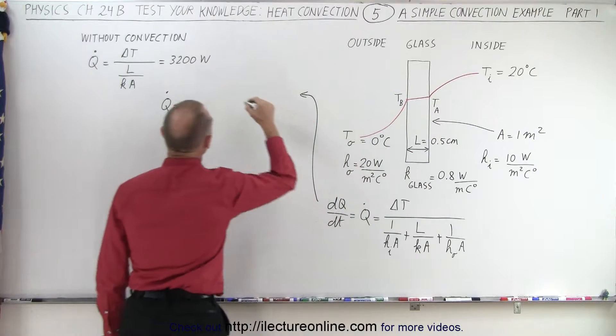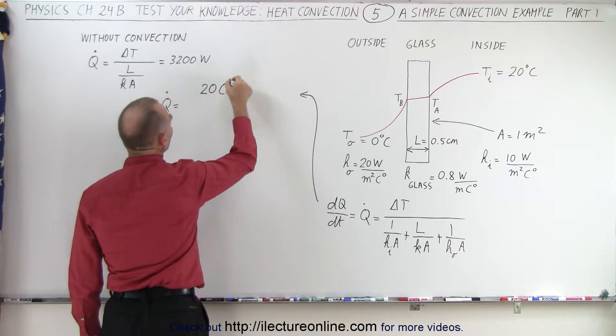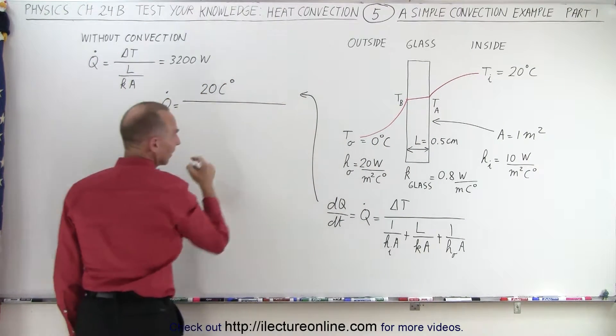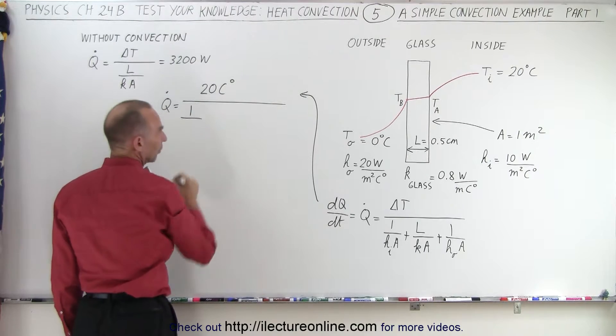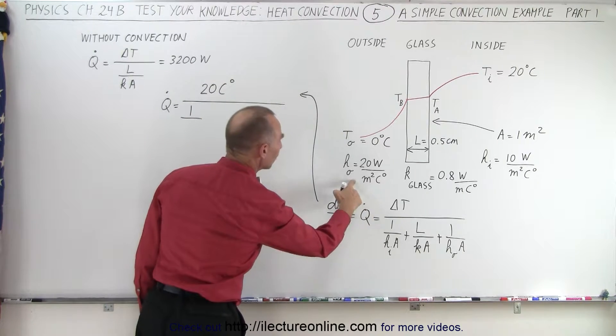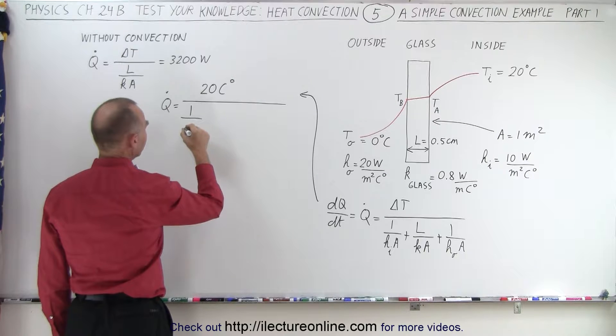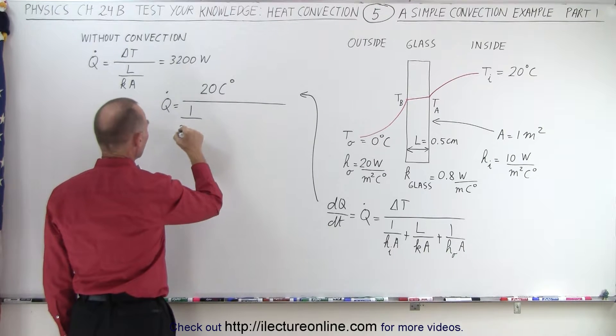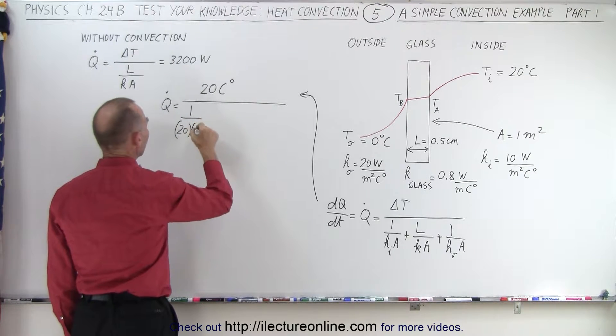Divided by one over h sub i, which is going to be 20—and we're going to leave out the units to make things a little bit cleaner—times one. Let's just leave out the units like that.